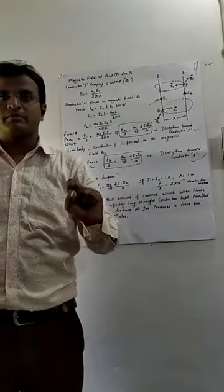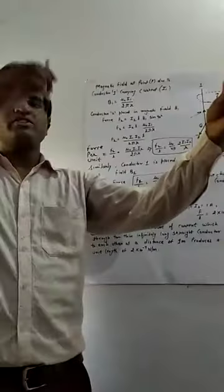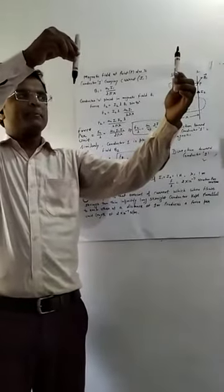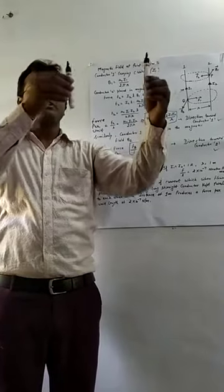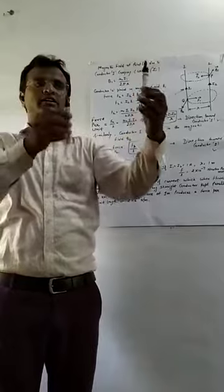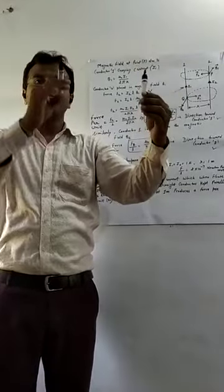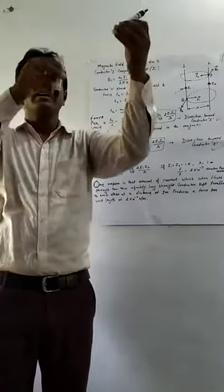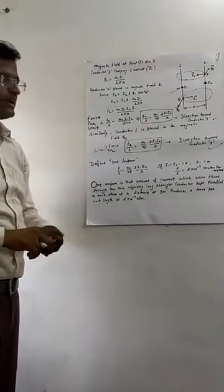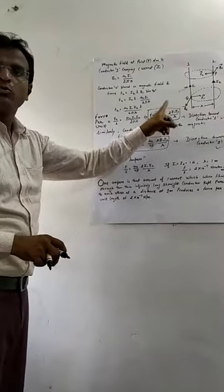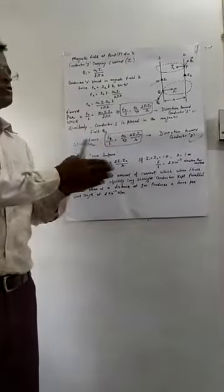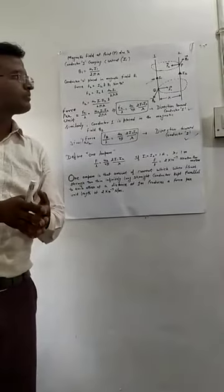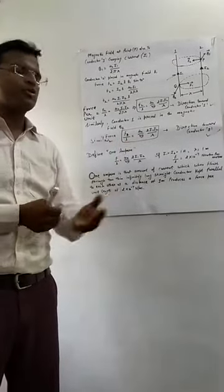When the direction of current is reversed in one conductor, the conductors repel each other. When currents are in the same direction they attract; when the direction of current is reversed they repel. The magnitude of force per unit length remains the same: (μ₀/4π)(2I1I2/r).